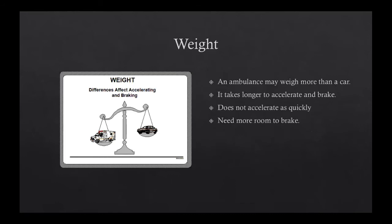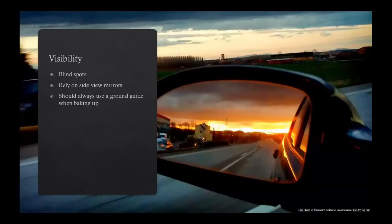An ambulance weighs a lot more than your car — it takes longer to accelerate and brake, so you need more room and must plan for acceleration. Visibility is one of the biggest issues; there are tons of blind spots with an ambulance. You have to rely on your side mirrors. Even though most modern ambulances have rearview cameras, that equipment can get you in trouble because it's not always accurate. Whenever possible when backing up, you should always use a ground guide.